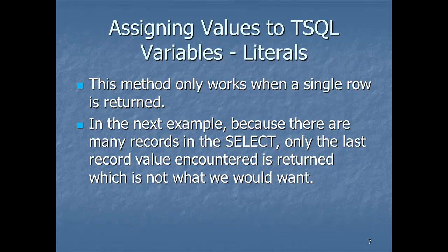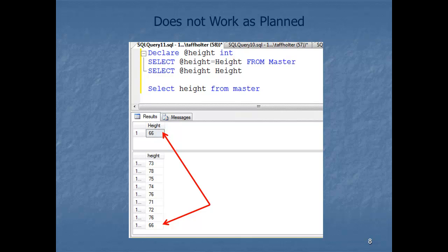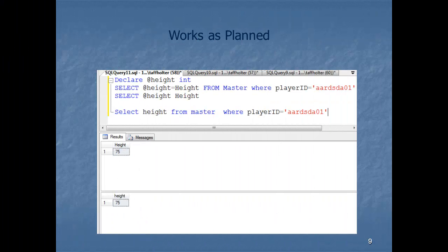This works when a single row is returned. Keep in mind, to place a value back to the variable we have to have a single value. What happens if we have a SELECT statement that returns more than one row? Here I've made the correction from the last slide and modified the previous example to return a single row. This time I'm grabbing the height of the player with player ID AARDSDA01 and displaying that variable. The last line proves the height from the first three lines of the script returned the correct height of 75 inches.